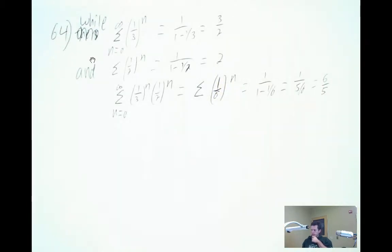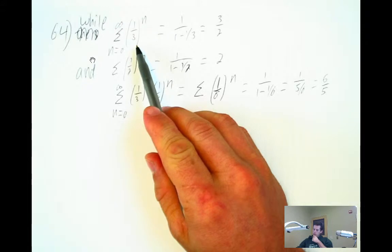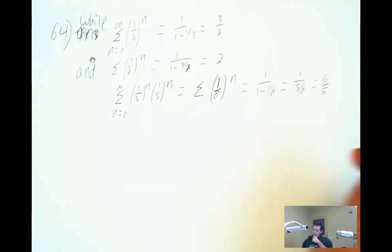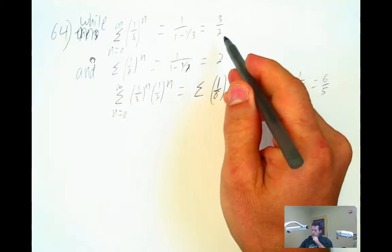I just fooled around with it. I know that this geometric series converges to three halves and this geometric series converges to two, so I'm going to say well this converges to three halves and this converges to two.